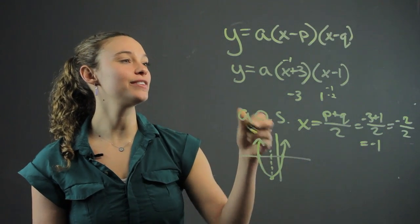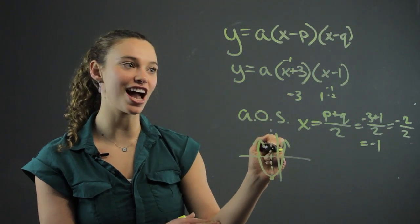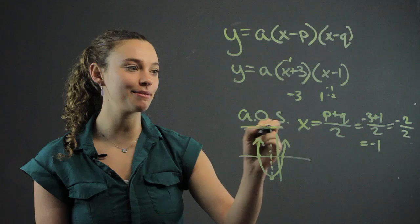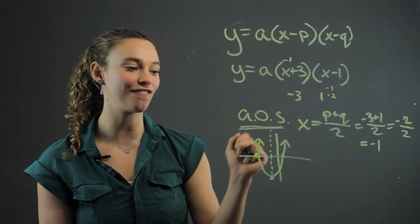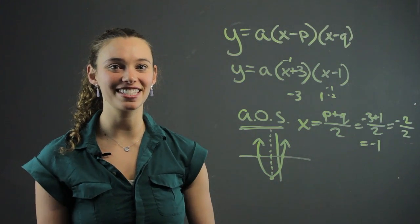So here, we use the intercept form to find the quadratic. Make sure you find the axis of symmetry and you know your p and your q to find that. I'm Rachel and thank you for learning with me today.